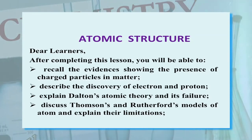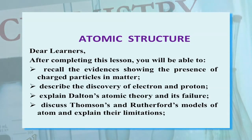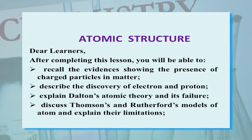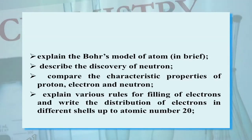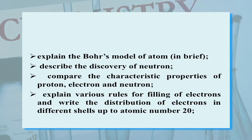After completing this lesson, you will be able to recall the evidence showing the presence of charged particles in matter. You will be able to describe the discovery of electron and proton, explain Dalton's atomic theory and its failure, and discuss Thomson's and Rutherford's model of atom and explain their limitations. You will also be able to explain the Bohr's model of atom in brief, and describe the discovery of neutron, and compare the characteristic properties of proton, electrons and neutrons.